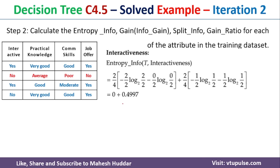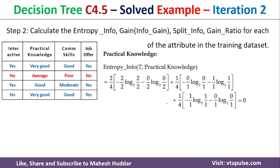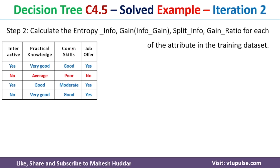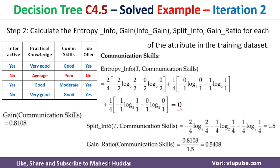For interactiveness in the second iteration: entropy info = 0.4997, gain = 0.3111, split info = 1, gain ratio = 0.3112. For practical knowledge: entropy info = 0, gain = 0.8108, split info = 1.5, gain ratio = 0.5408. For communication skill: entropy info = 0, gain = 0.8108, split info = 1.5, gain ratio = 0.5408.